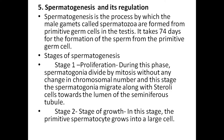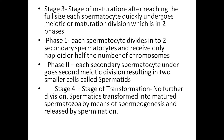Stage 2 — Stage of growth: in this stage, primitive spermatocytes grow into larger cells. Stage 3 — Stage of maturation: after reaching full size, each spermatocyte undergoes meiotic division, which occurs in two phases.